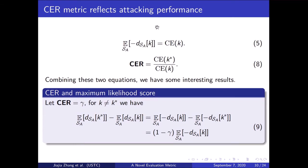Combining equation 5 and equation 8, we have some interesting results. Equation 5 tells us that given a key hypothesis, the expectation of the negative maximum likelihood score is exactly the cross entropy. Equation 8 gives us the definition of cross-entropy ratio. Let the cross-entropy ratio equal gamma. If we take the difference between the expectation of the score for the right key and the expectation of the score for any wrong key, the result equals 1 minus gamma multiplied by the expectation of the negative score for the wrong key.